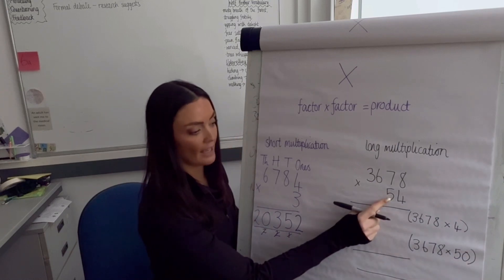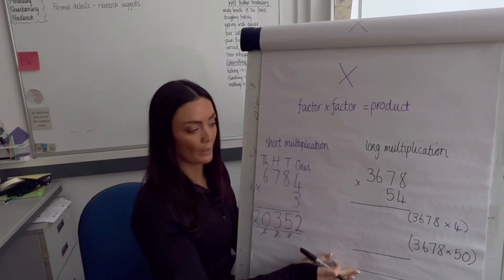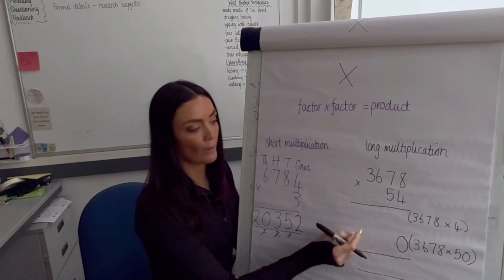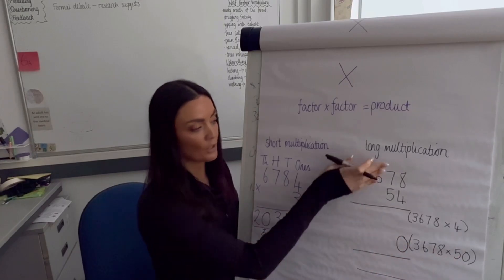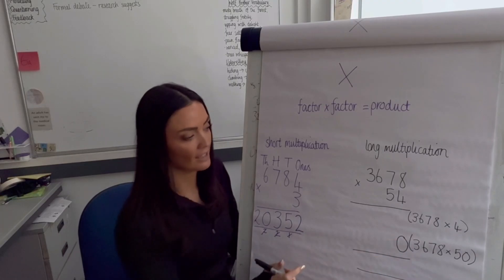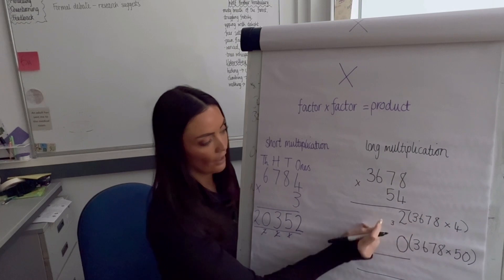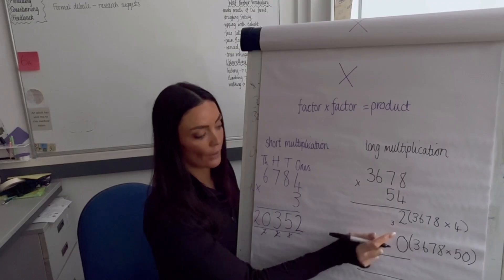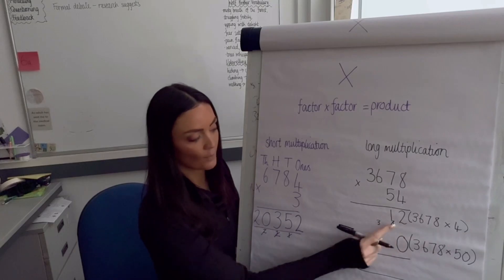We add our two answers together. We can put our placeholder zero in straight away, because when multiplying a whole number by a multiple of 10 it always ends in zero. Then: 4 multiplied by 8 equals 32; 4 multiplied by 7 tens gives 28 tens, plus the 3 exchanged underneath equals 31. Keeping numbers small underneath and crossing them off when used.